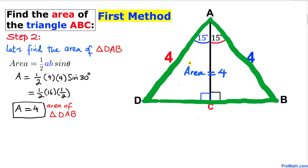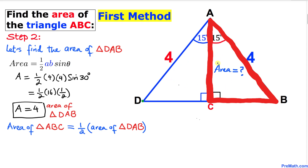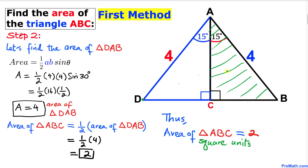Simplifying, 4 times 4 is 16 times one half gives us 4 square units. So the area of bigger triangle DAB is 4. However, we are only interested in triangle ABC, which is just half of triangle DAB. Therefore, the area of triangle ABC equals one half times 4, which gives us 2 square units.